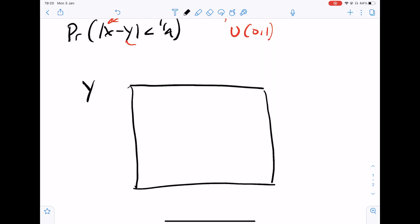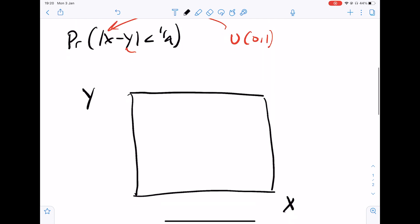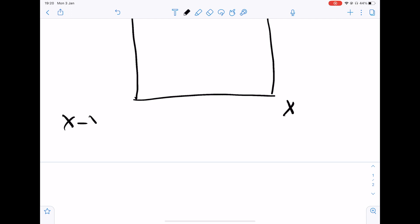So let's call this y and this x. Now we need to think of all the combinations we can get from |x - y| less than a quarter. So the first one is obviously just x minus y is less than a quarter.